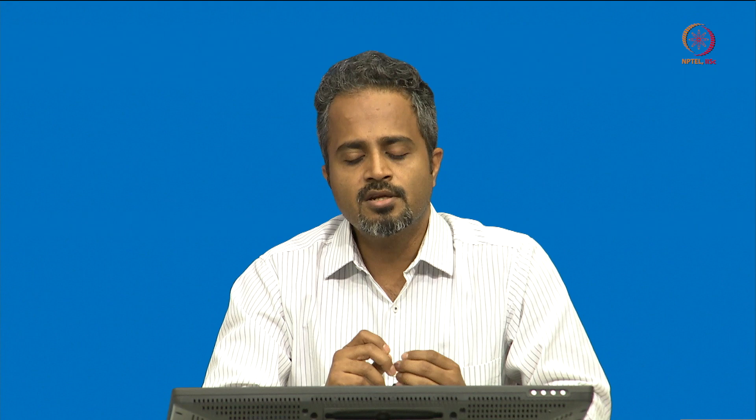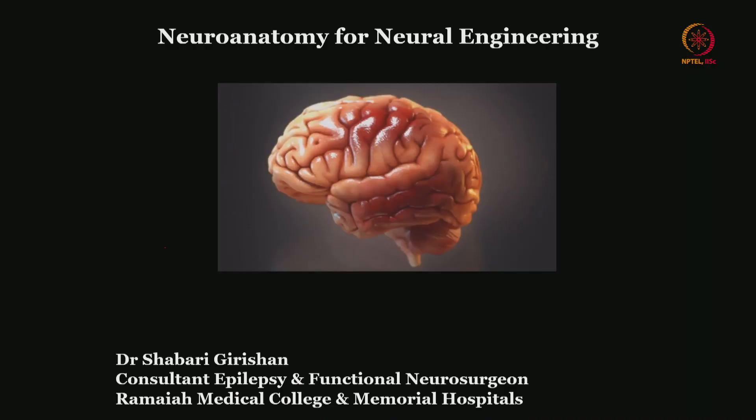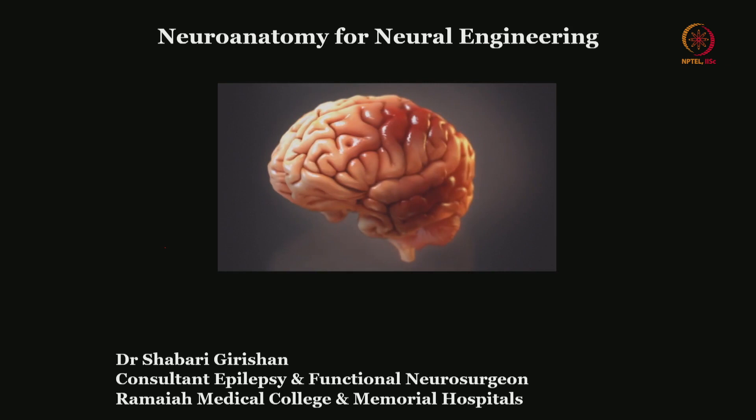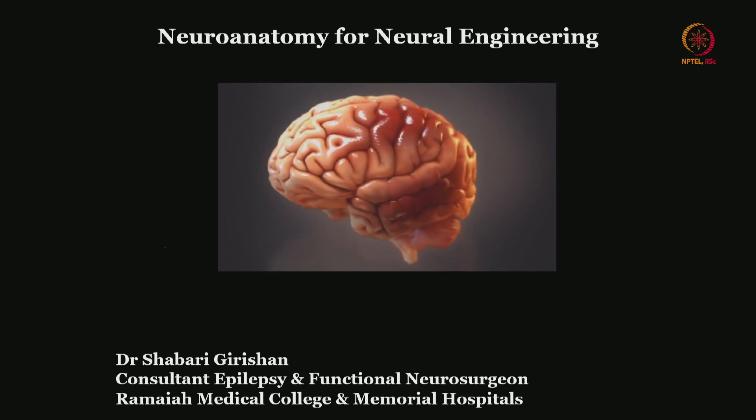Now we can start looking into the details of the anatomy. Initially I will deal with the gross anatomy of the human brain, then gradually move on to rodent anatomy with comparisons. This is a very fascinating organ and what I would like to emphasize is the three-dimensional orientation of the brain.